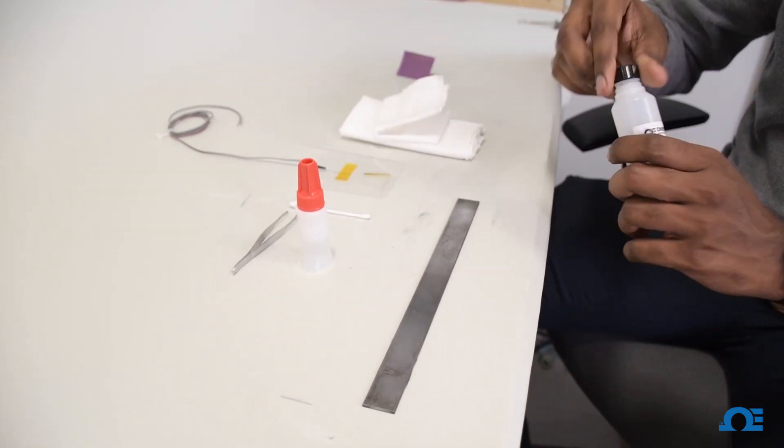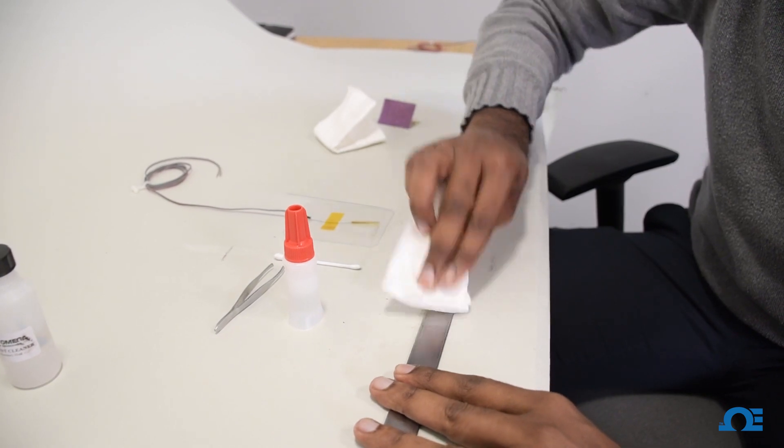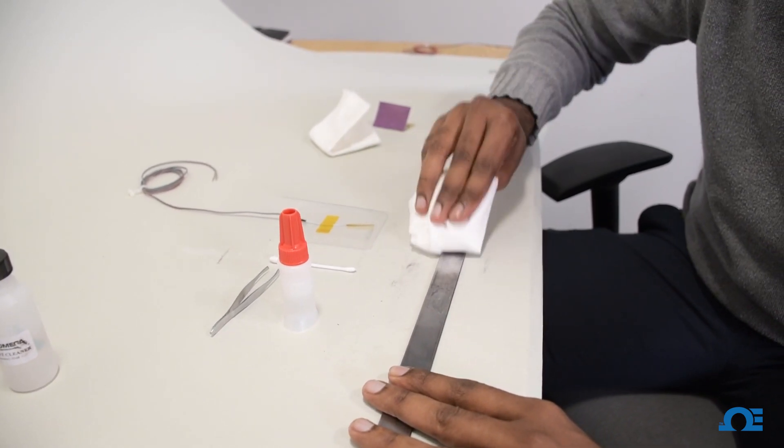Then take the Omega solvent cleaner and apply a few drops on the polished surface and wipe it clean. Go unidirectionally from one end to the other.